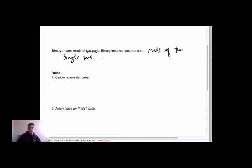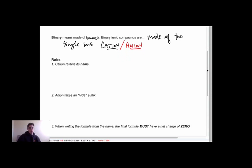One is a cation. Remember the cation is the positive ion. And the other is the anion. So we're looking at a single positive and negative part, or ion, sticking together to form this compound.